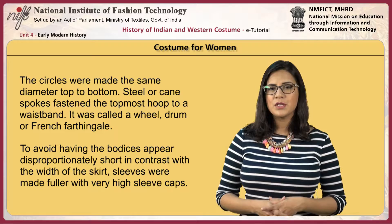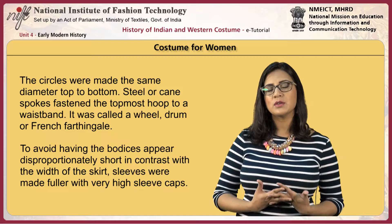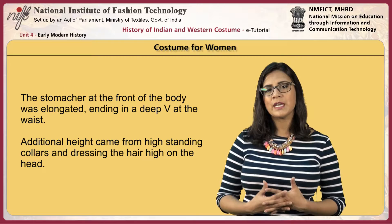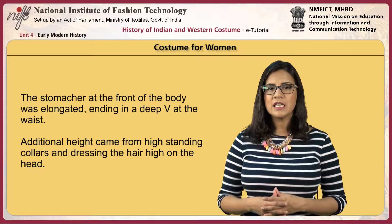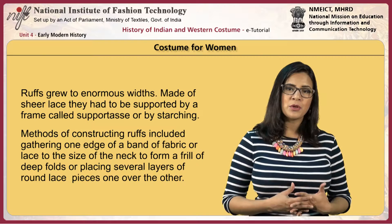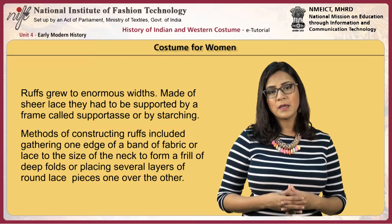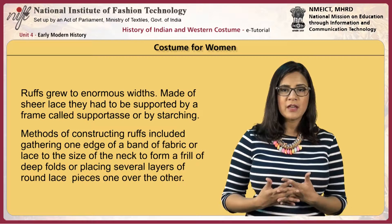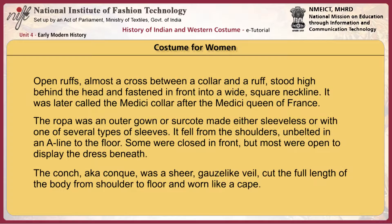To avoid having the bodices appear disproportionately short in contrast with the wide width of the skirts, sleeves were made fuller with very high sleeve caps. The stomacher at the front of the body was elongated, ending in a deep V at the waist. Additional height came from high standing collars and dressing the hair high on the head. Ruffs grew to enormous widths; made of sheer lace, they had to be supported by a frame called supportasse or by starch. Methods of constructing ruffs included gathering one edge of a band of fabric or lace to the size of the neck to form a frill of deep folds, or placing several layers of round large pieces one over the other. Open ruffs, almost a cross between a collar and a ruff, stood high behind the head and fastened in front into a wide square neckline. It was later called the Medici Collar, after the Medici Queen of France.